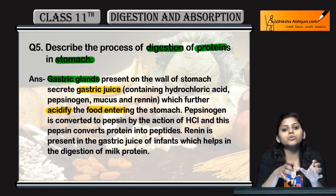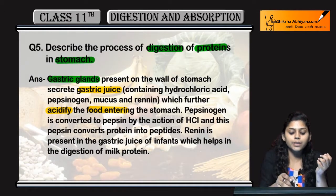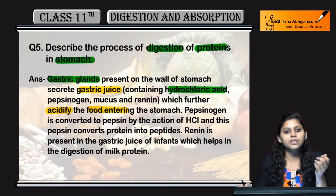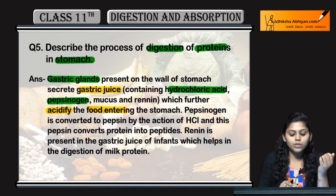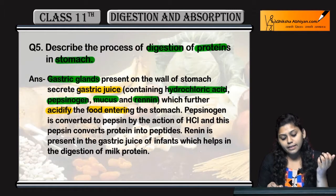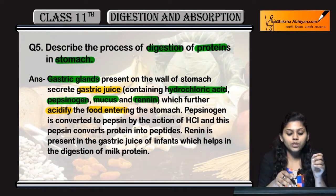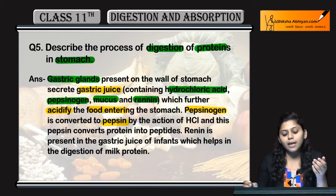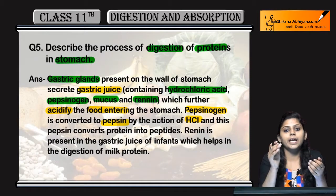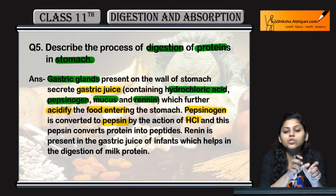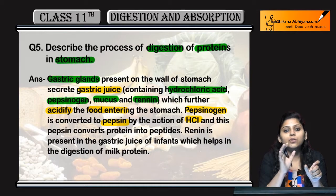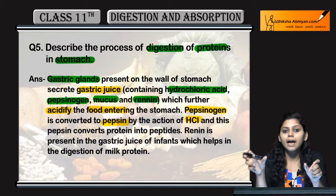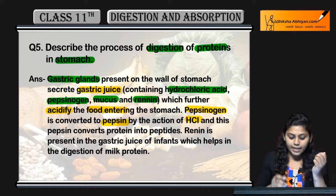These gastric juices contain hydrochloric acid (HCl), pepsinogen, mucus, and renin. Pepsinogen is converted into pepsin by the action of HCl. HCl acts on pepsinogen — the inactive form — and breaks it down into pepsin, which is the active form that carries out protein digestion.